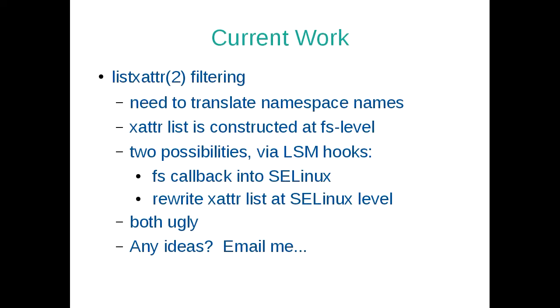The current work I'm looking at is supporting listxattr properly. We need to be able to translate namespace names for a list of extended attributes and make sure people only see what they should see. The list is created by the individual filesystem implementation — in XFS it's down in the XFS code, in EXT4 it's done there. So there are two options: have the filesystem call back through LSM to request a translation decision, or rewrite the entire list at the end in SELinux or SMAC. Both are pretty ugly and both are layering violations that would probably attract Christoph Hellwig's wrath.